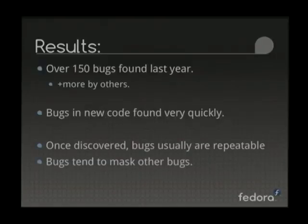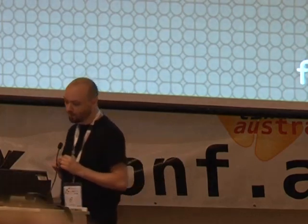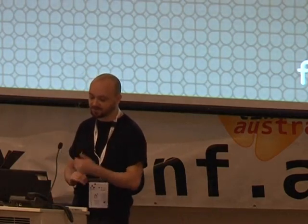As for results: last year it found over 150 bugs from my runs. Other people have also been running this — a guy at Intel has an enormous cluster of really fast machines constantly running this on linux-next, and he's found even more. When code gets merged into the tree or into linux-next, it tends to find bugs in new code very quickly, usually not having to wait two days. Once you see one bug, you'll tend to hit that same bug over and over rather than finding different bugs — they tend to mask other bugs.